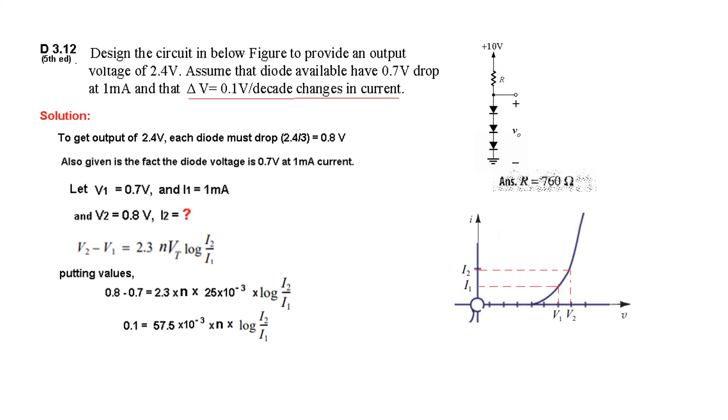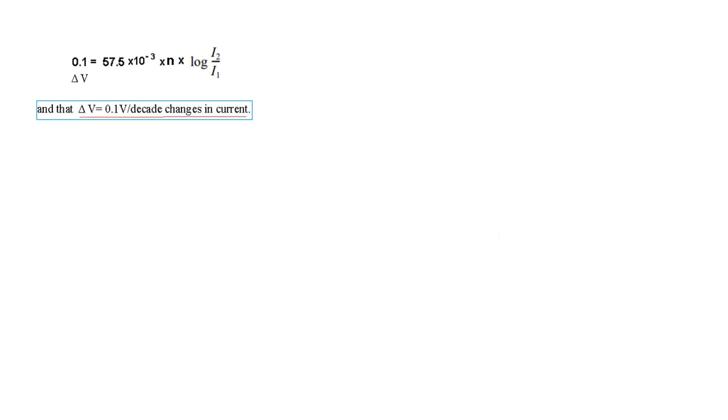Now we will use this condition. What is it saying? If the voltage, delta V, is 0.1, the current will change 10 times. That means there will be a decade change in current. From the given condition, we conclude that since delta V is 0.1 volt in our case, hence I2 will be 10 times I1, that is decade higher. And I1 we know is 1 mA, therefore I2 will be 10 mA.